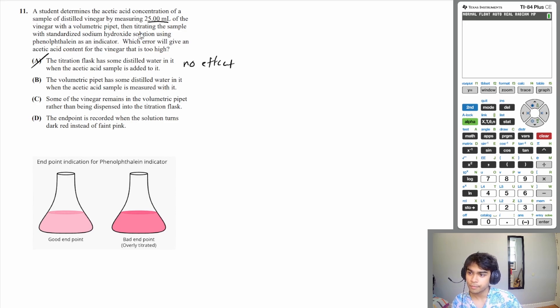you're going to use less than you need. And then when you use those values to calculate the concentration, your concentration is actually going to be less. So this does the opposite. This will decrease the concentration. C, some of the vinegar remains in the volumetric pipette rather than being dispensed into the titration flask. This will do the same thing. This means you have less acetic acid. Therefore, you use less sodium hydroxide. And then when you go to calculate it, your concentration will be less than it should be. So it's similar to B.